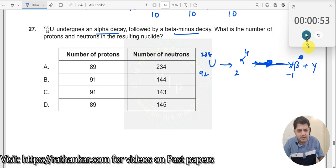You need to find out what are the values of y over here. Now 2 minus 1 is 1. This is 92. This should be 91 over here, and here it is 0 plus 4 is 4. 238. This should be 234 over here.